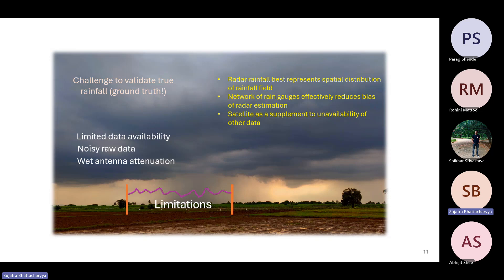To conclude: radar rainfall has the best representation of spatial distribution of rainfall, and we can use rain gauges to correct the bias from radar. CML can be used as supplementary data when there is no availability of other data, and we can combine CML with other sources to get accurate spatial distribution. The challenge remains: how to validate these results, because we have a limited number of gauges. A 2023 paper shows at what places around the world this work is being done. Surprisingly, there appears to be no work done in India. Most work is from European countries, Israel, China, South America, and Africa.